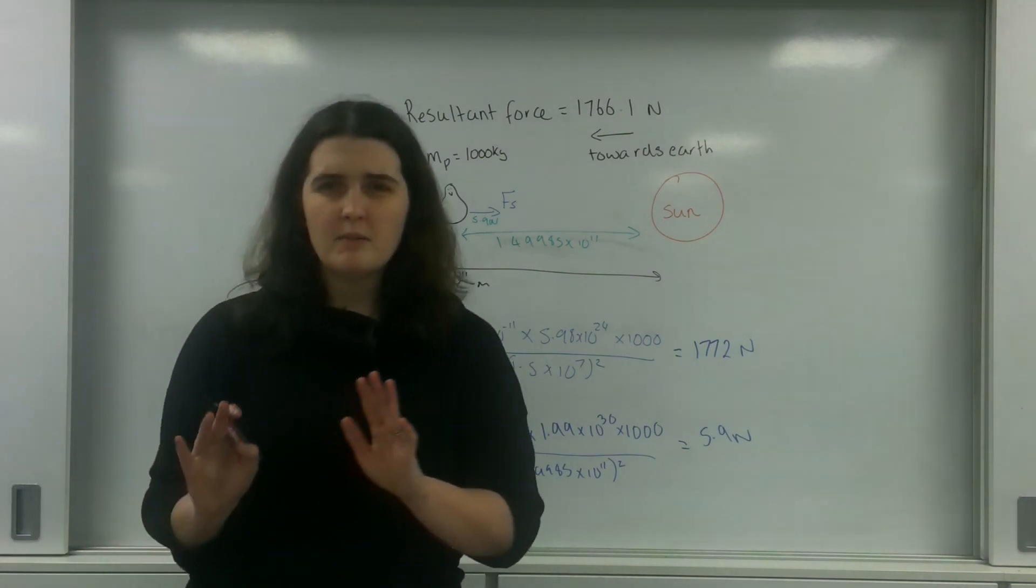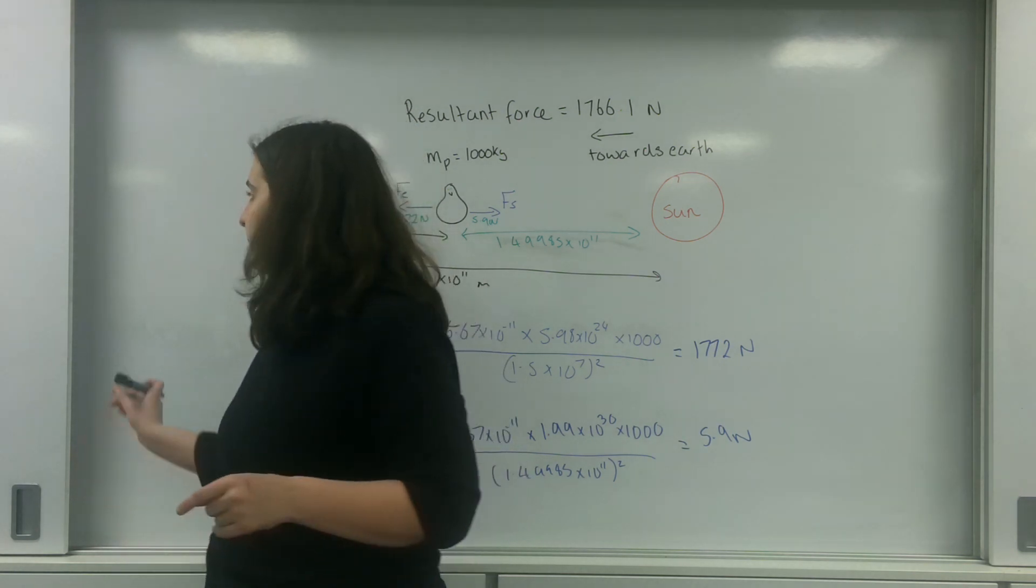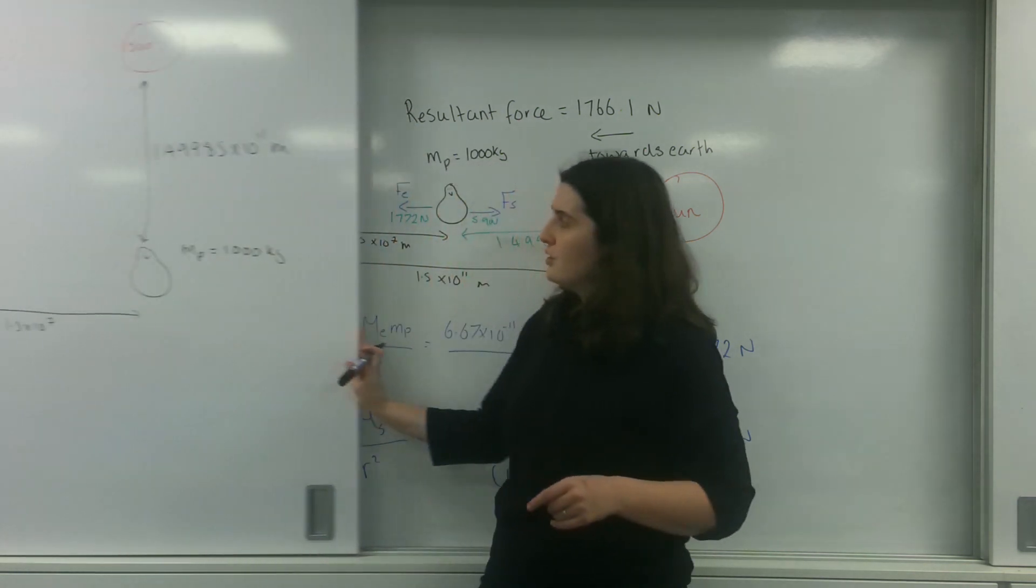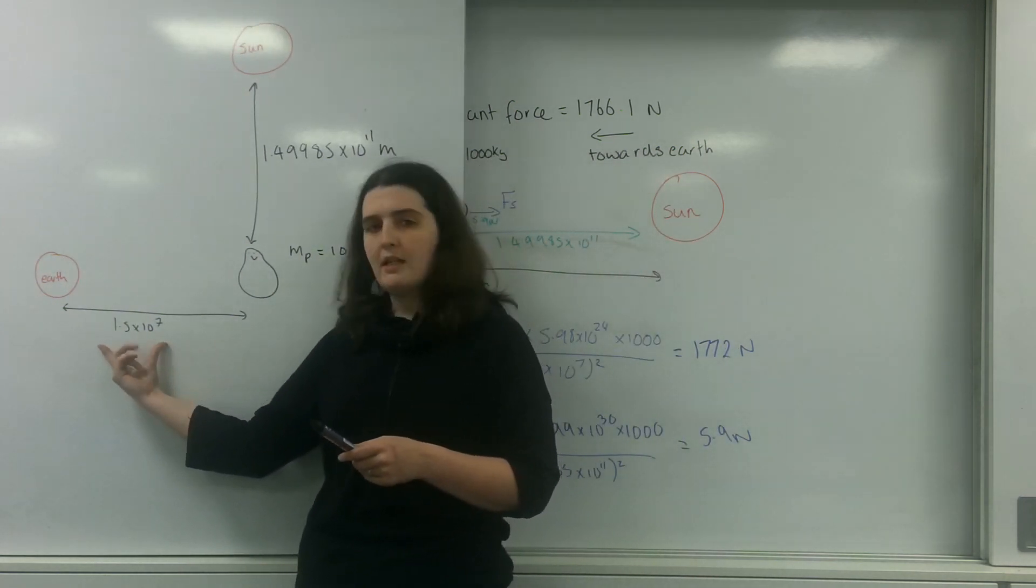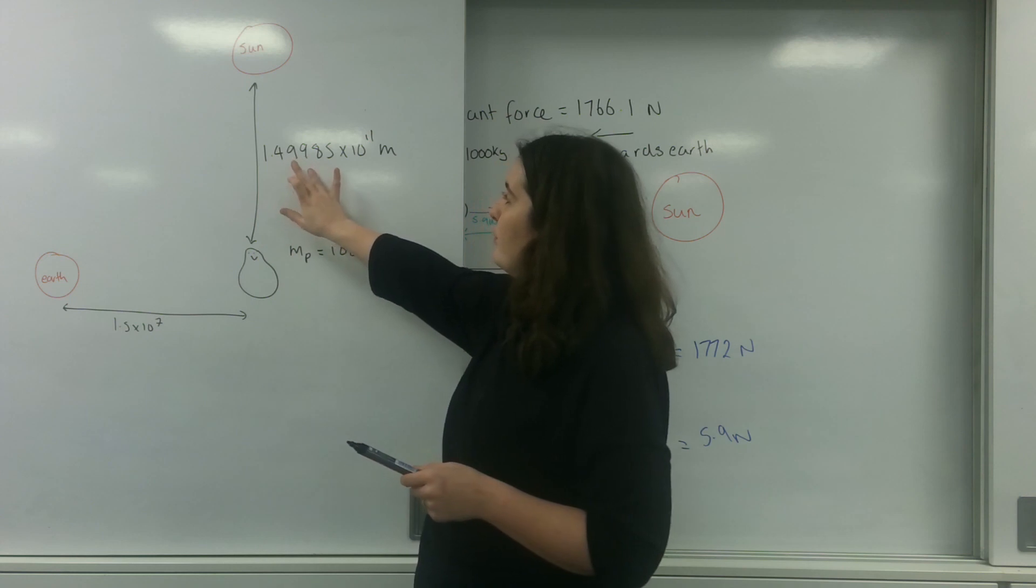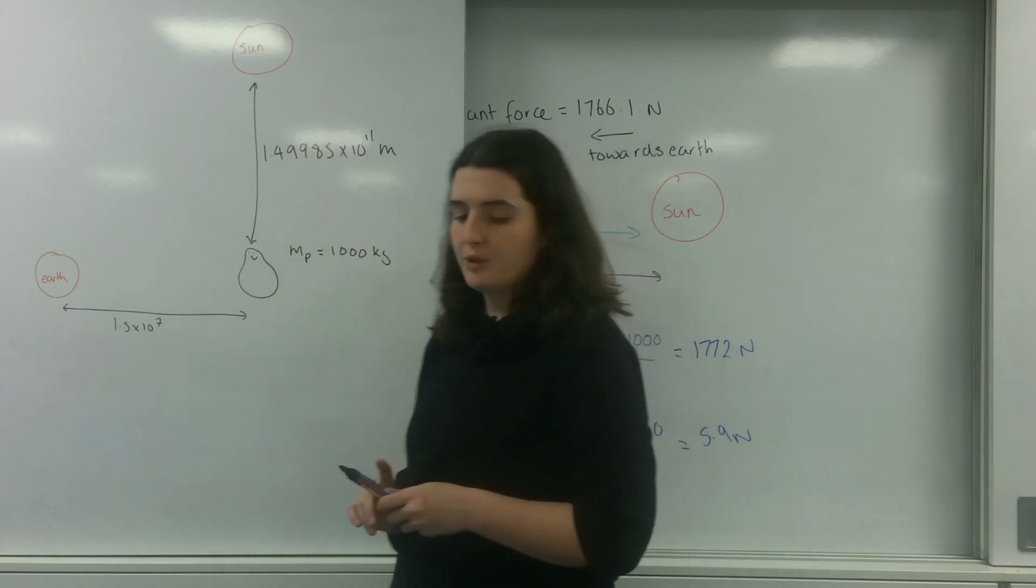I'm going to take this a little bit further. This is something you may see more in electrostatic fields, but I'm going to do it. I've just changed the direction here. I've now got the same distances: 1.5 times 10 to the 7 and 1.49985 times 10 to the 11. But this time they're at right angles to each other.